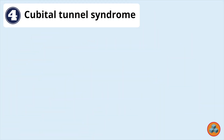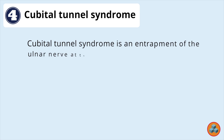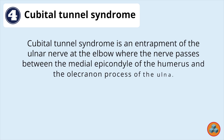Option 4: Cubital tunnel syndrome. Cubital tunnel syndrome is an entrapment of the ulnar nerve at the elbow where the nerve passes between the medial epicondyle of the humerus and the olecranon process of the ulna. Typical findings would include pain or paresthesias in the distribution of the ulnar nerve — that is to say, ring and little fingers — and a positive Tinel sign at the elbow.